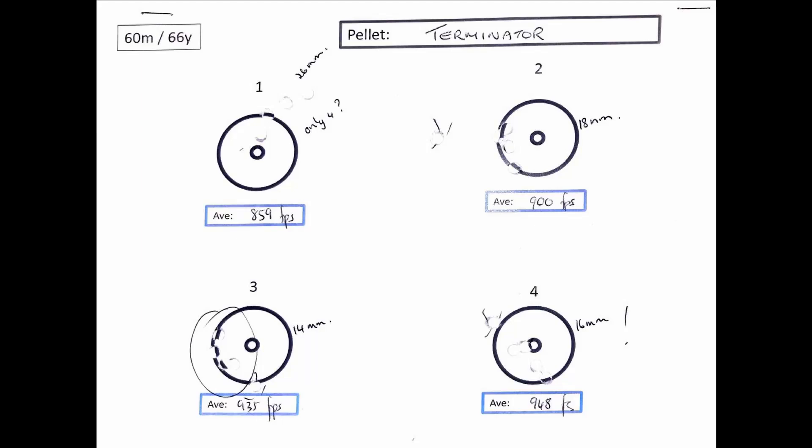The Terminators did exceptionally well for a 30 meter pellet at 60 meters, with groupings of 14 millimeters, 16 millimeter, 18 millimeter. Wowzer! I might reconsider this as one of my hunting options going forward.